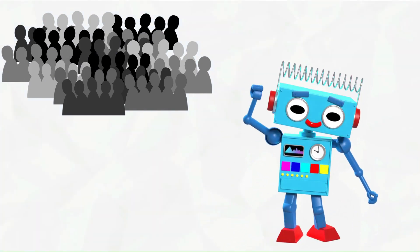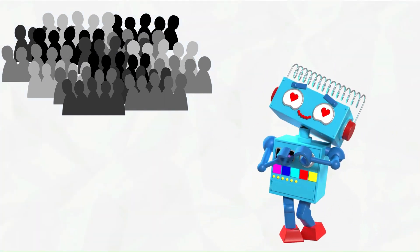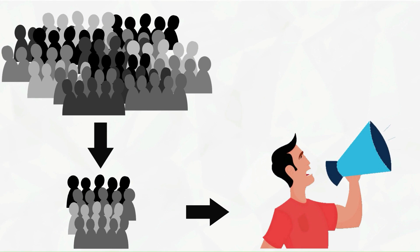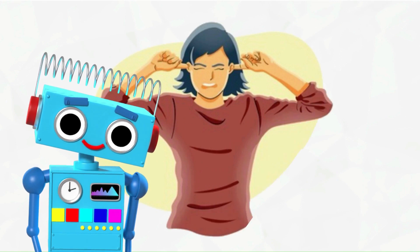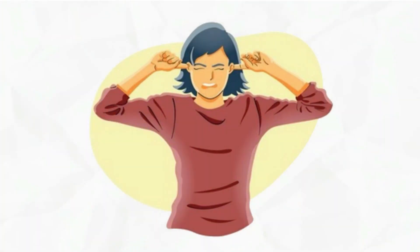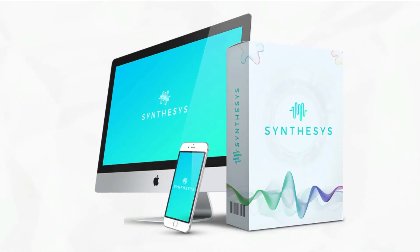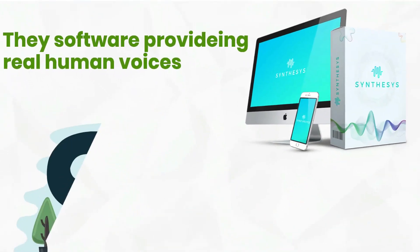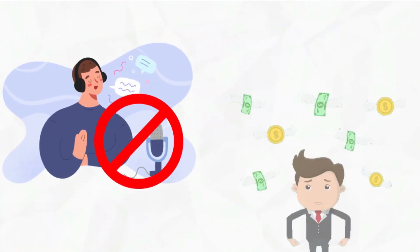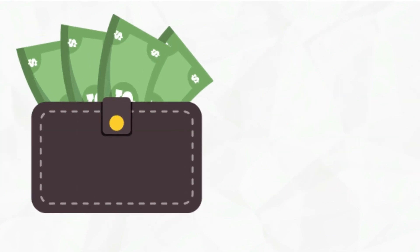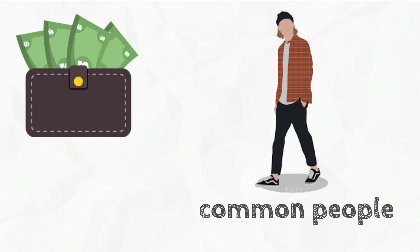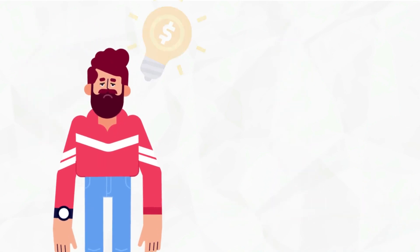There are a lot of text-to-speech software on the market, but the problem is people are suffering with robotic voiceover. The majority of text-to-speech software provides robotic voiceover — only a few will provide real human voices. In my channel I made a video about a software called Synthesia, the best text-to-speech software providing real human sounds, but many people are not comfortable with it because the price is a little bit high and not affordable for common people.